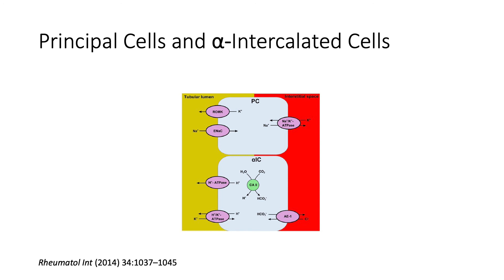Below the principal cell you can find the intercalated cell, which maintains acid-base balance. The alpha-intercalated cells get rid of hydrogen via the hydrogen ATPase pump and the hydrogen-potassium ATPase pump. We will talk about that in much more detail when we discuss metabolic acidosis. Thank you very much — I'll end here and we'll continue this exciting topic about potassium physiology in the next lecture.